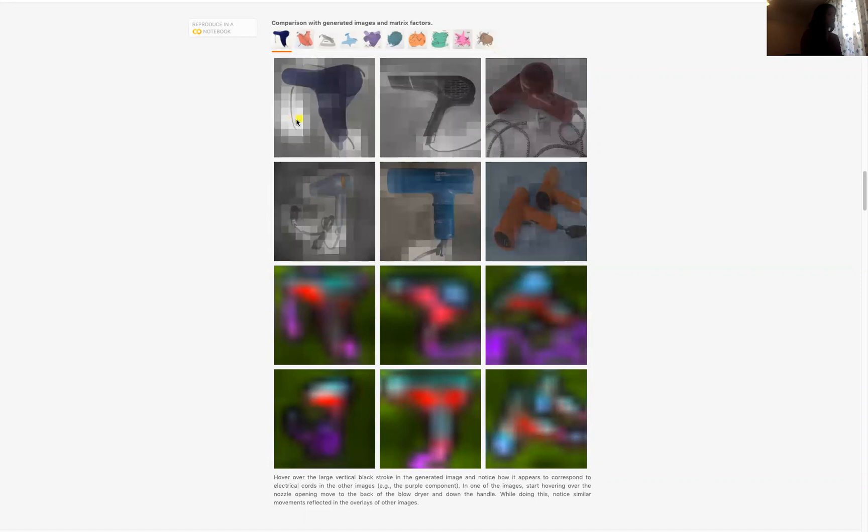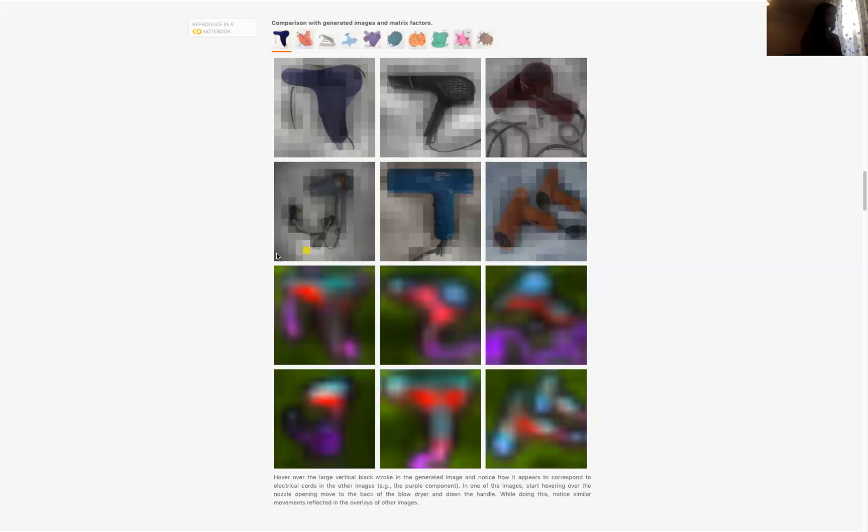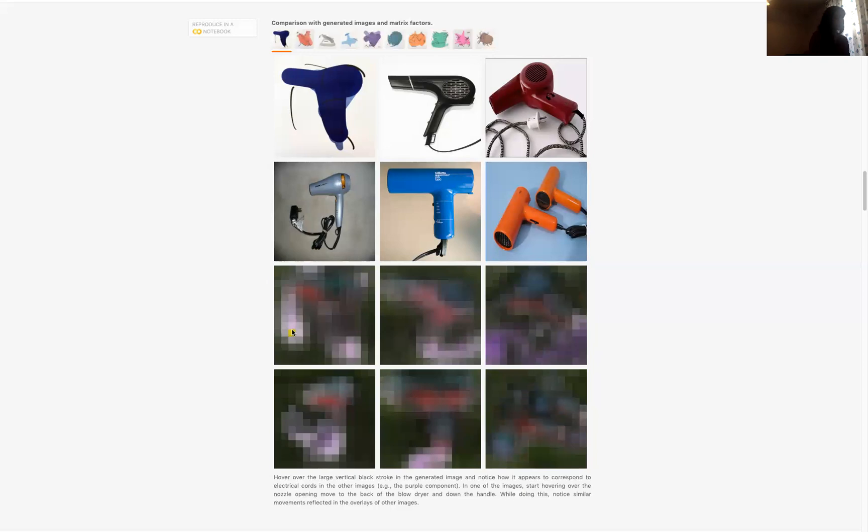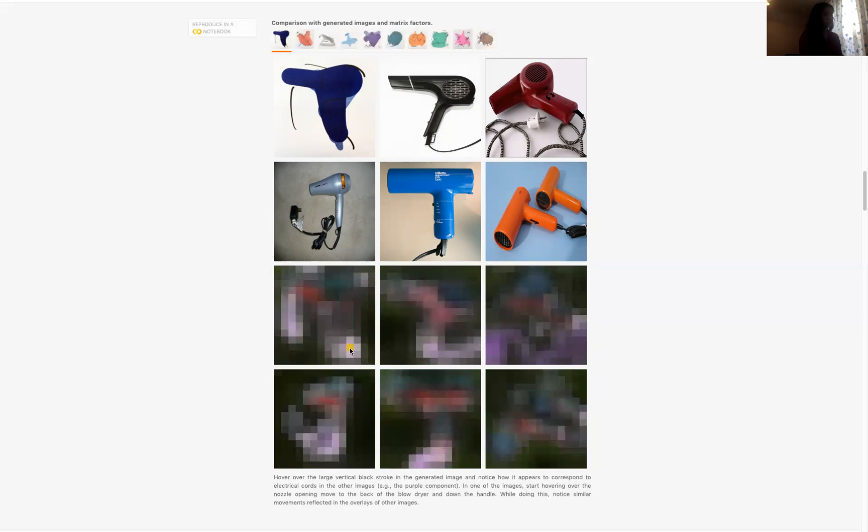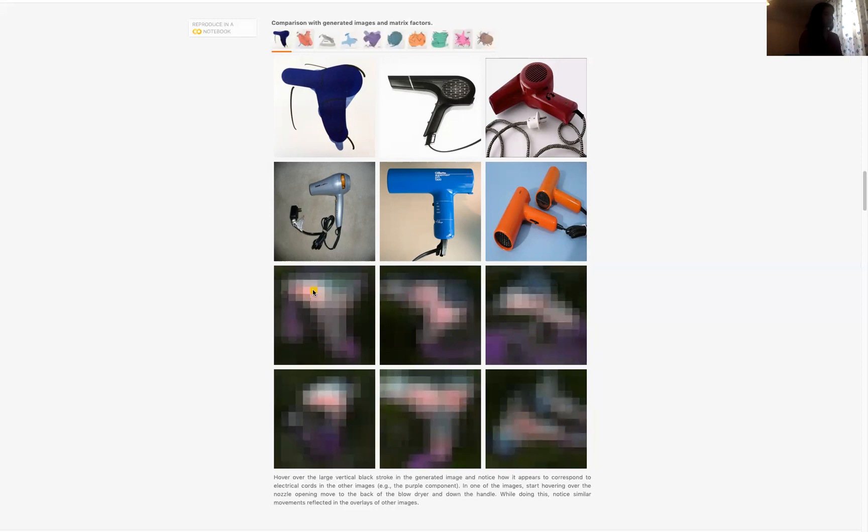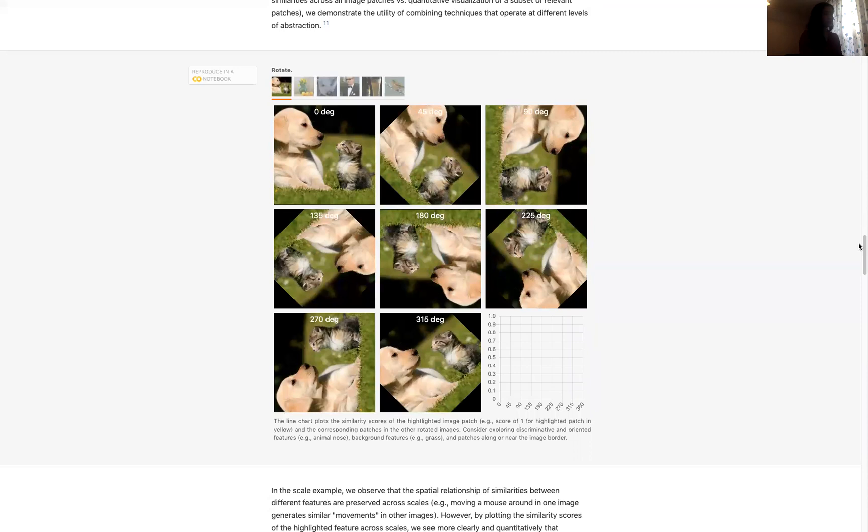Something else we're able to discover is we're able to understand what the more abstract qualities of this generated image connotes. For instance, as we hover over this black line, we notice that it seems to highlight the other chords. By generating this visualization of different factors which we generate using non-negative matrix factorization, we're also suggested different areas that we can explore. For instance, it highlights the chords as a separate component. It also seems to highlight exploring the top of a blow dryer compared to the bottom stem.